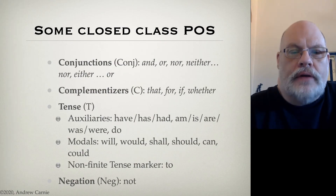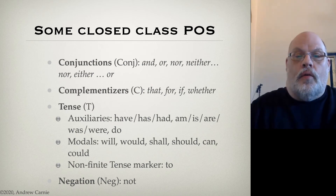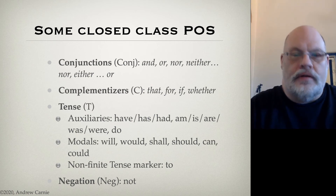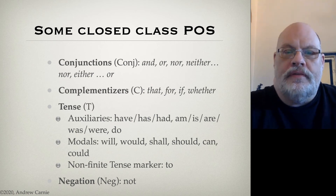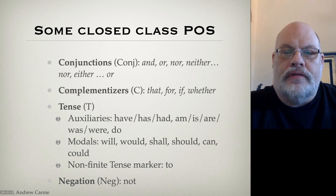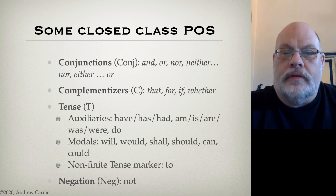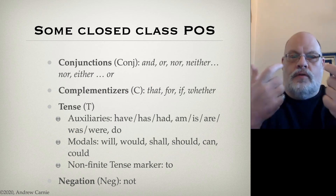Another category of functional items are the conjunctions. Conjunctions are words that connect two like items together on an equal basis. For example, "this book and that book," or "red and blue." Also the word "or," as in "six books or seven books." These are conjunctions that connect two items of equal importance.